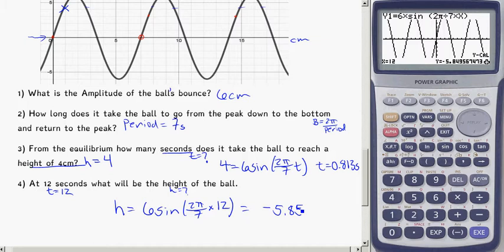So I might just check for myself if this makes sense, and it does. If I look at 12, I'm going down, so it's going to be a negative number, and I'm awfully close to 6, so negative 5.85 is probably a good answer for me.